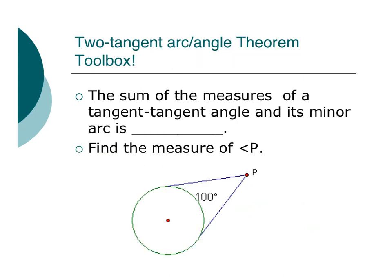Here's something that we talked about a little bit before. The sum of the measures of a tangent-tangent angle and its minor arc is what? Well, let's think about this for a sec. If this arc right here is 100, then the arc out here is 260, right?